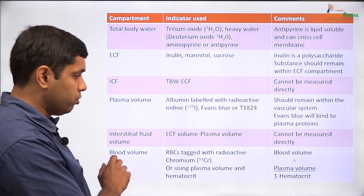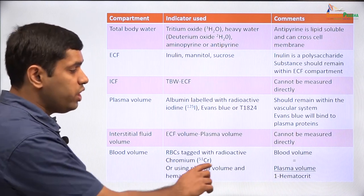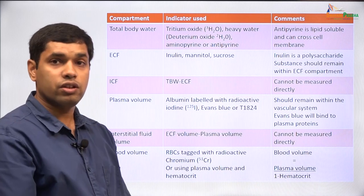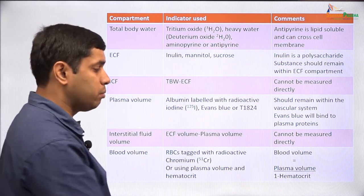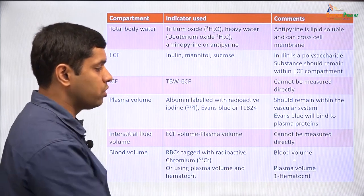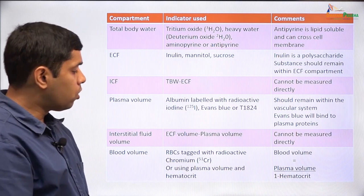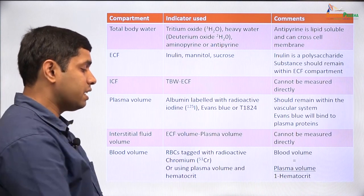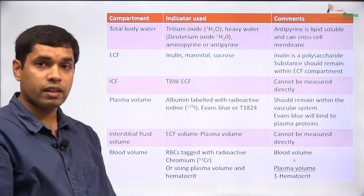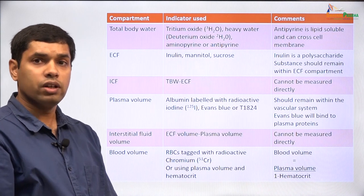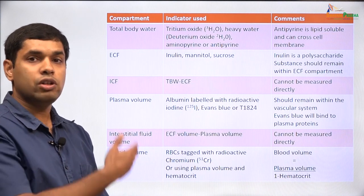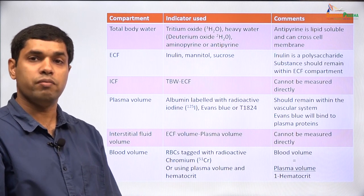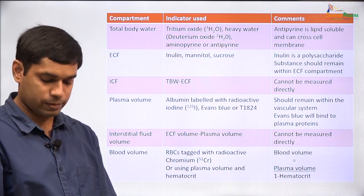To get blood volume, if we know the plasma volume and the hematocrit, we can use the formula: blood volume = plasma volume ÷ (1 − hematocrit). We could also use RBCs tagged with radioactive chromium to find the total blood volume. This tabular column describes the various compounds used to measure the different body fluid spaces.